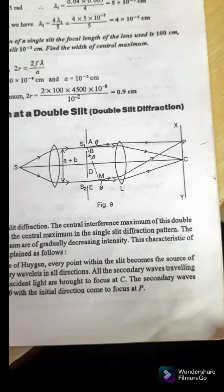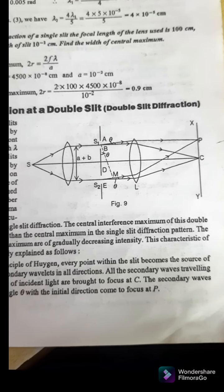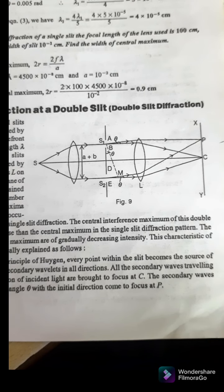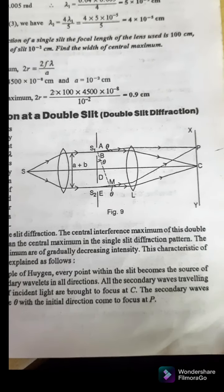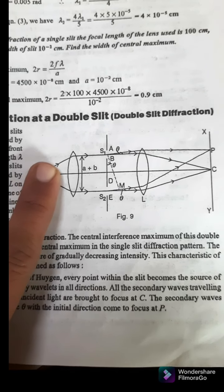On both sides of the maxima we obtain fringes of lower intensity. Now the full explanation in Hindi. Here is S source, here is light.